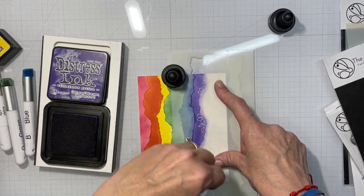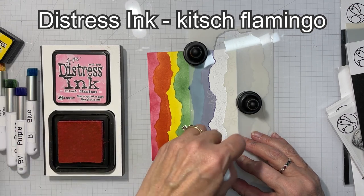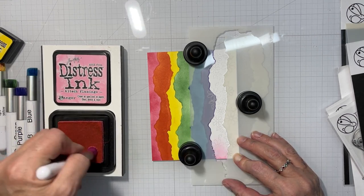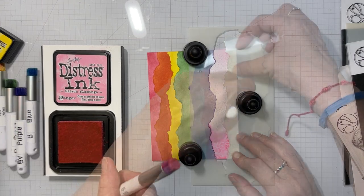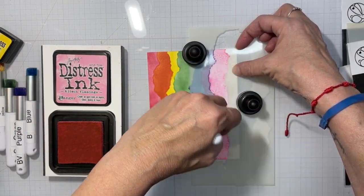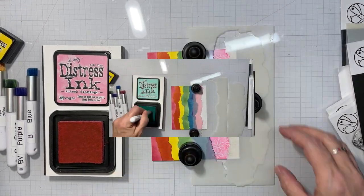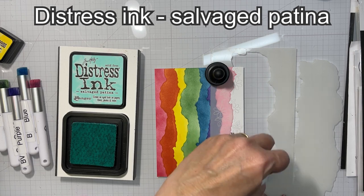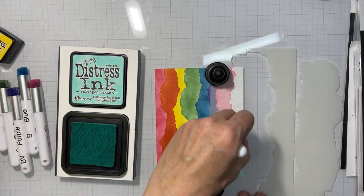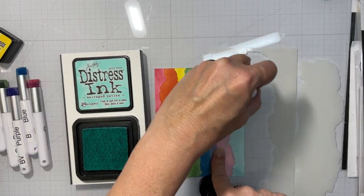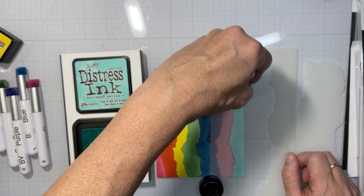I could have repeated the rainbow in order again, starting off with red, but I wanted that pink and teal in there. But if there was anything I could change about my rainbow, I think I would have went with a brighter orange and a brighter green. And I would have changed the blue altogether to Salty Ocean. I think it would have made the rainbow pop a little bit more. Not that it doesn't look good in the end when it's all said and done and the card is finished.